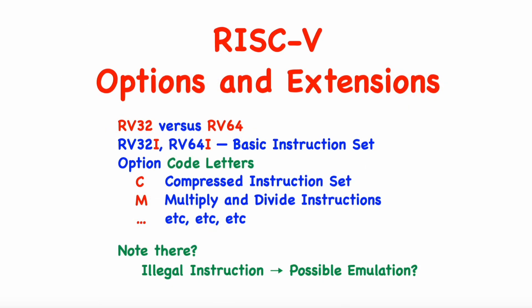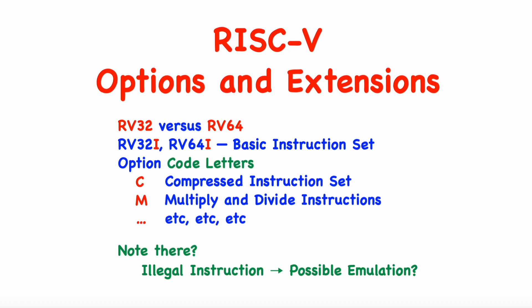Before we get started, I wanted to mention that the RISC-V processor specification can be thought of as a menu of design options and potential extensions, and hardware designers can pick and choose which options to actually implement. The RISC-V project uses a set of letter codes to indicate which options and extensions are actually implemented on a given processor core. As a programmer, you need to be aware of this code system so you can know what your core can actually do.